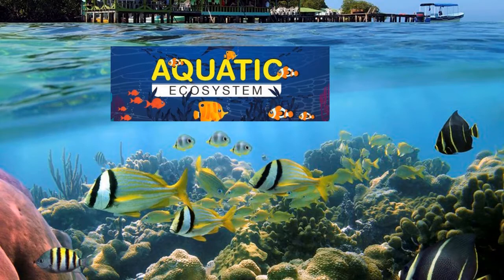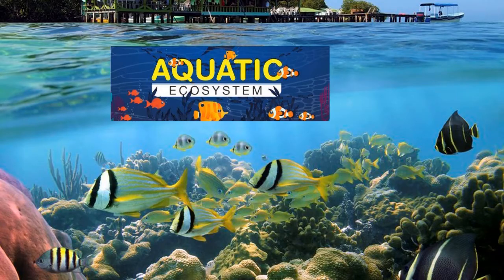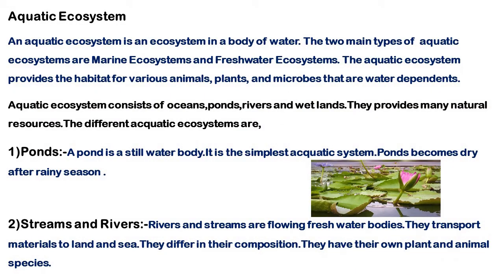Different Types of Ecosystems. Our main topic is Aquatic Ecosystems. Water ecosystem is called Aquatic Ecosystem. An Aquatic Ecosystem is an ecosystem consisting of a water body. Aquatic Ecosystem has two classes: one is Marine Ecosystem, and two is Fresh Water Ecosystem.